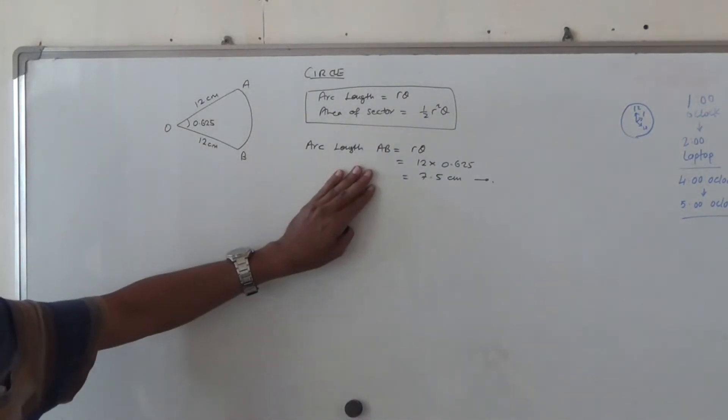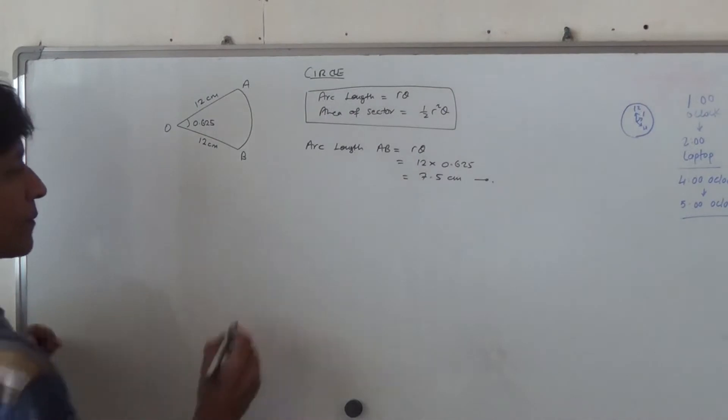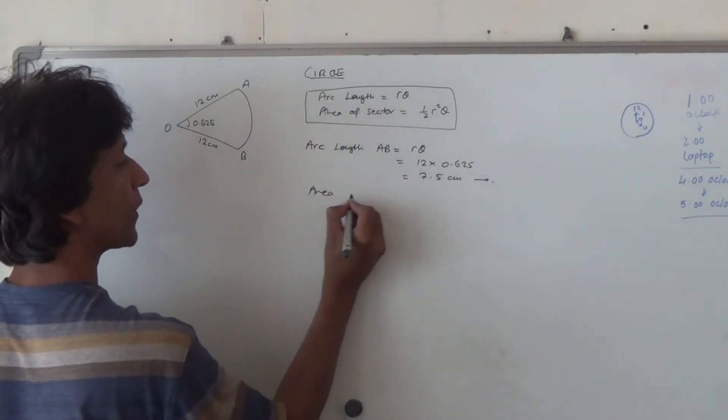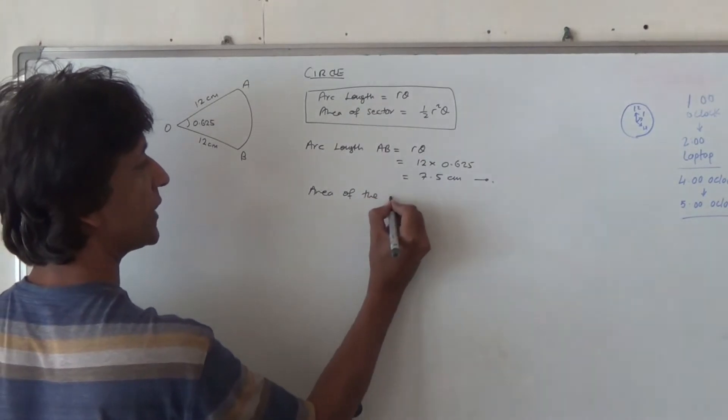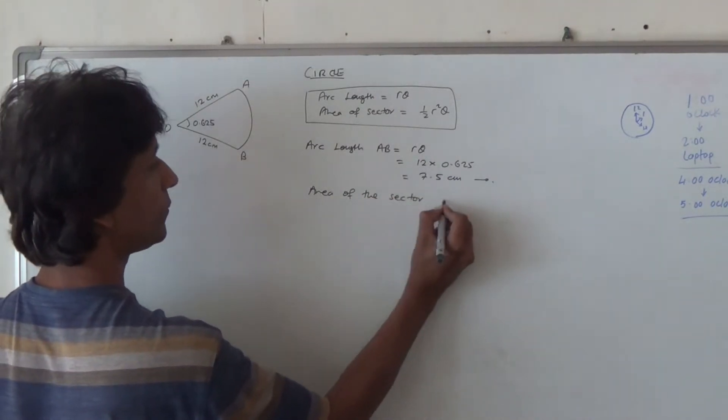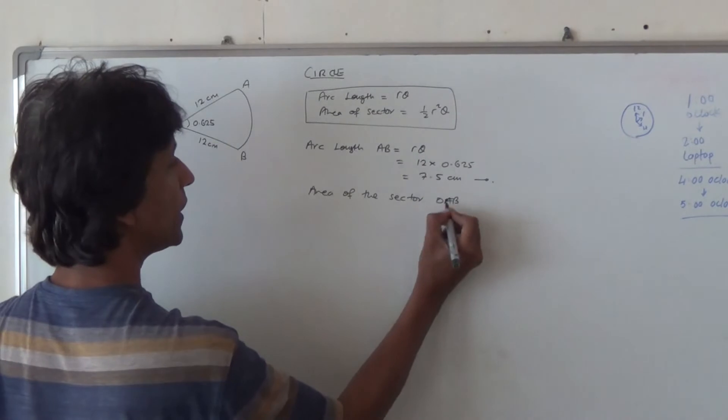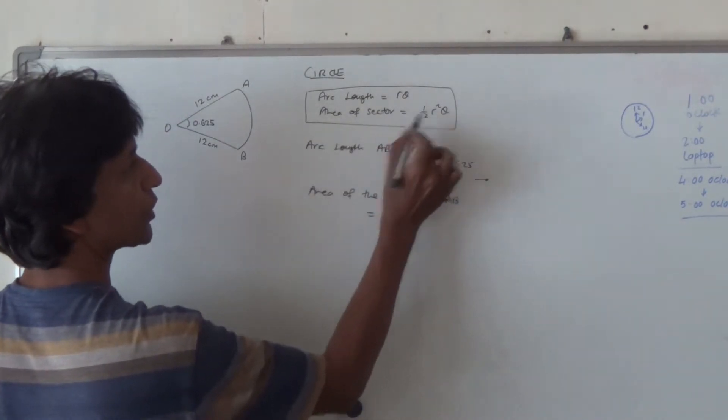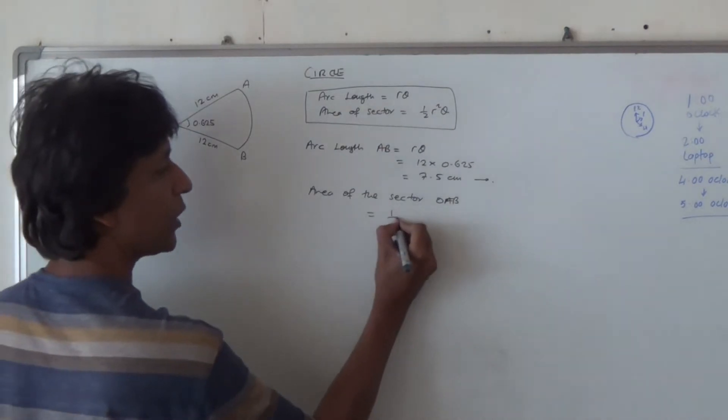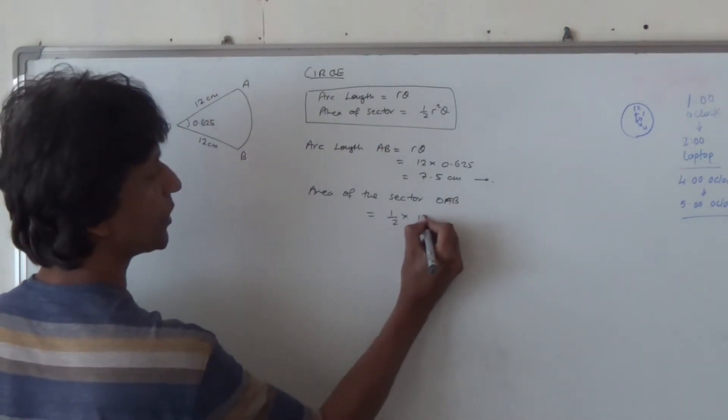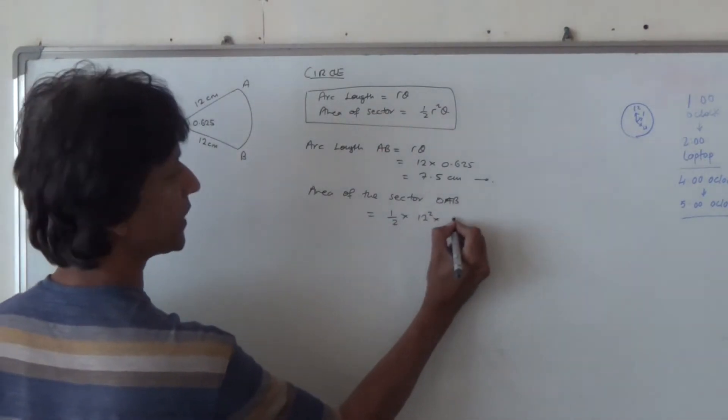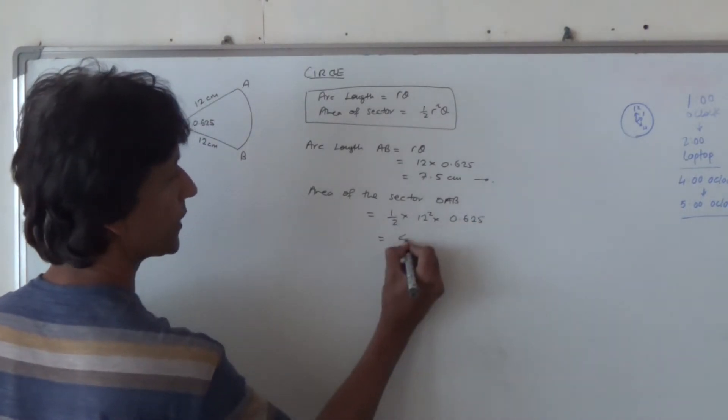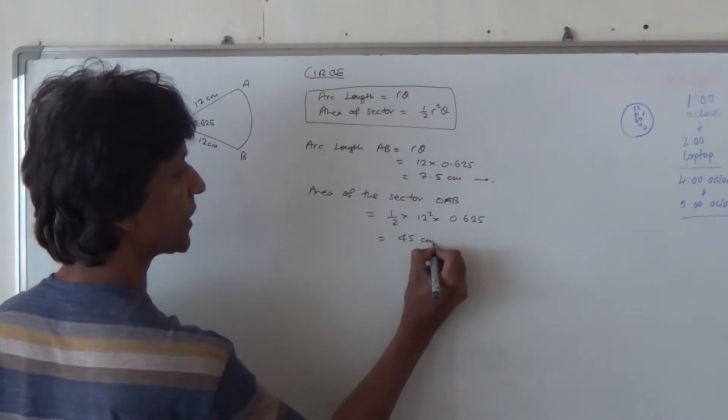Now this is how we go about and find arc length. Then we want to find the area of the sector OAB. Of course we're going to be using this second formula here, half r square theta. So we've got half times r to the square, which is 12 square, times theta, 0.625. If you do this in a calculator, you should be able to get 45 centimeters square.